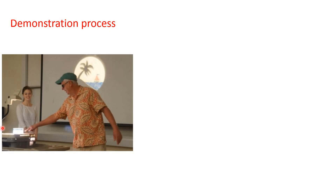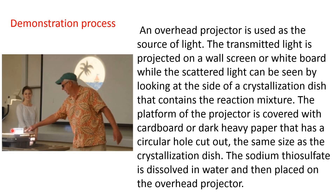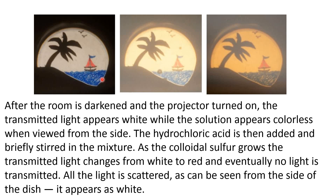Now let's see the demonstration process. Here, the source of light is the light of the overhead projector. The platform of this projector is covered with heavy paper which has a circular opening of the same size as the container where the sodium thiosulfate solution is kept. The sodium thiosulfate solution, which is a clear solution, is taken in this container. Initially it will be completely colorless because it is a true solution, and the transmitted light is projected on the screen. When the room is darkened and the projector is turned on, transmitted light will appear as white. The solution appears colorless when viewed from the side because no light is scattered.